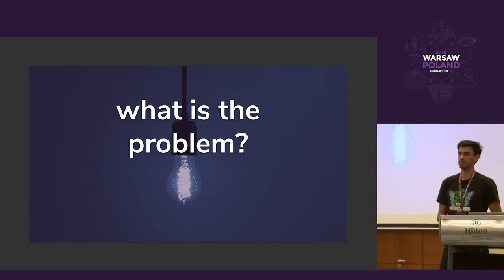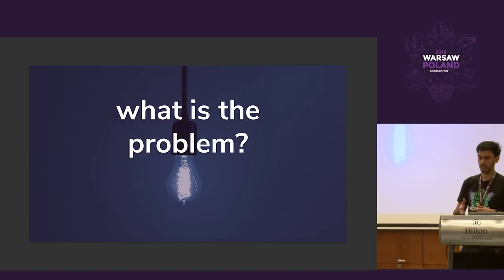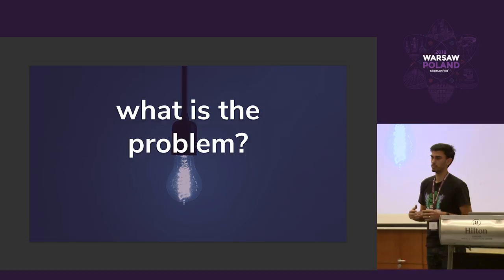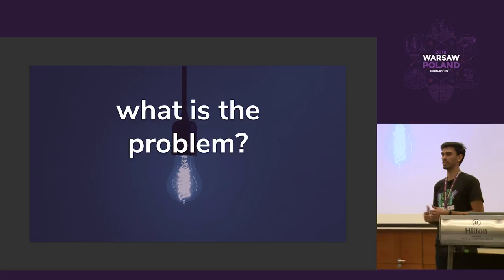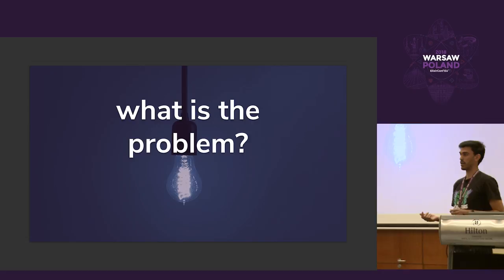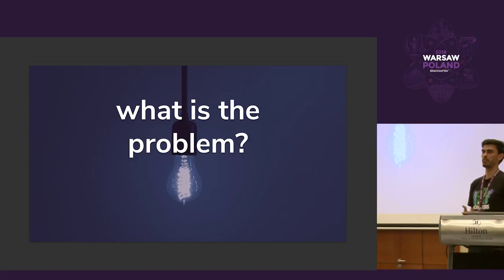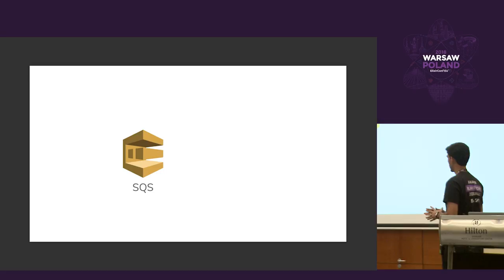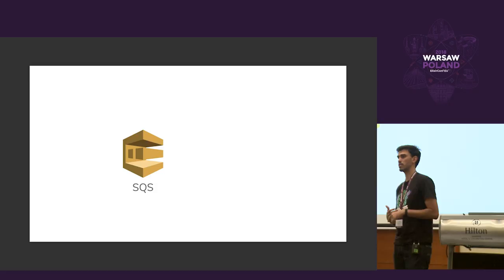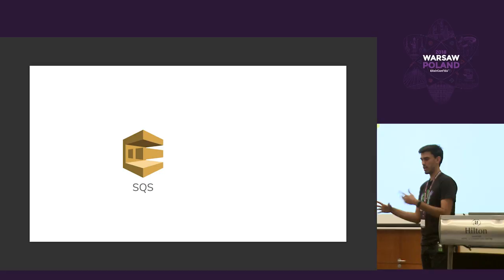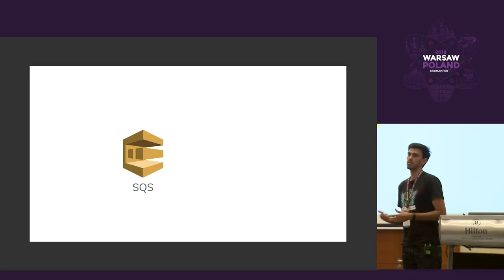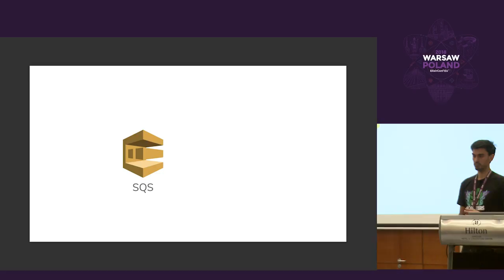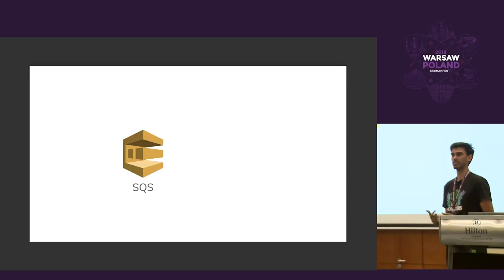We rewrote some components in a different language — I won't say which language because I don't think it's worth comparing languages. We needed to rewrite it in Elixir to get better performance. Before that, we were not using SQS, which is an AWS service for queuing messages. We used a background library that abstracted that for us, but then we needed a persistent way to keep messages, so we went with SQS as a managed service.